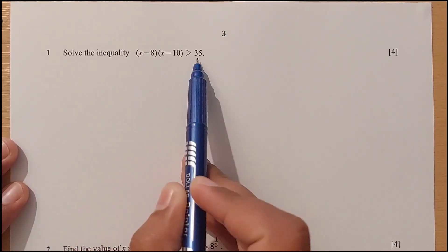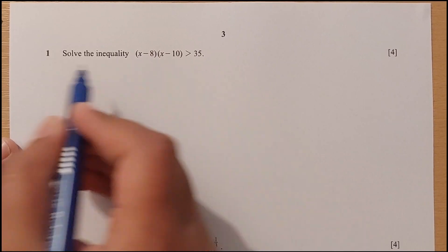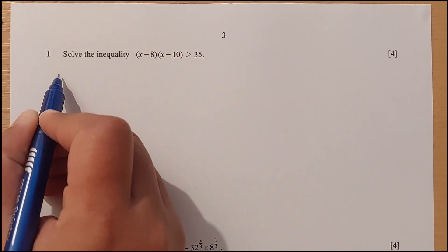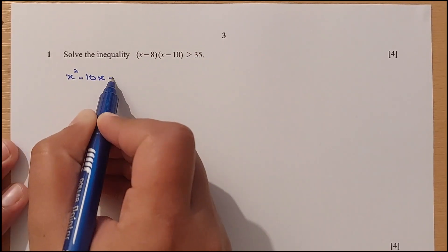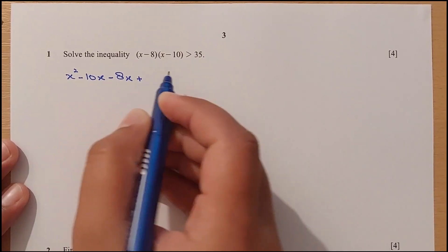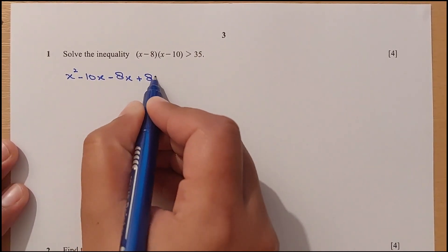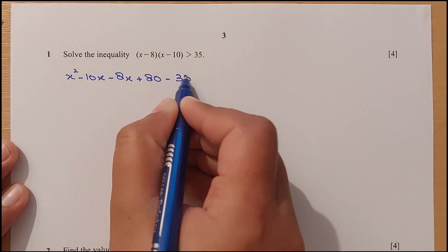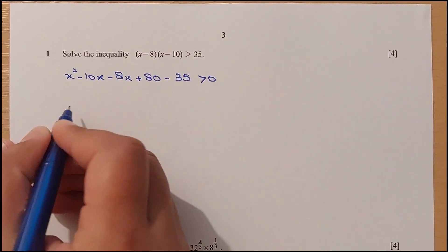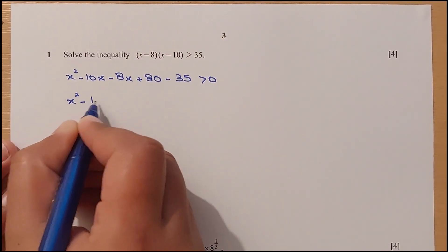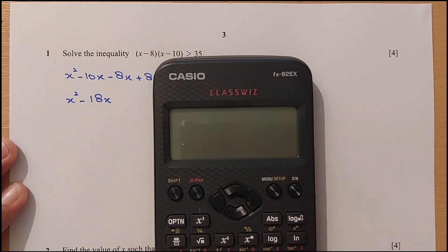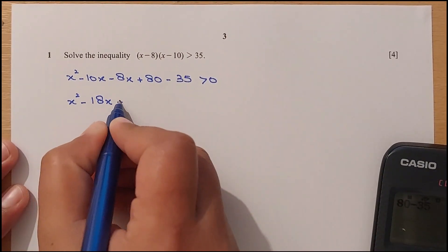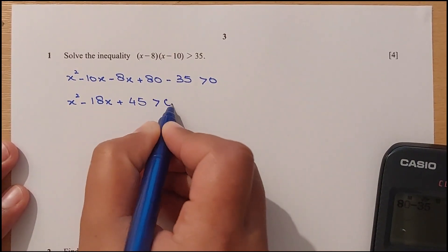Let me simplify this first, taking the product and multiplying by x and minus 8. We have x squared minus 10x minus 8x, and minus times minus is plus 80, and minus 35 gives us x squared minus 18x, and from 80 take away 35 is 45. We have plus 45, that is greater than 0.